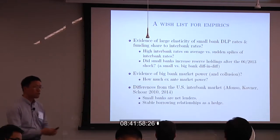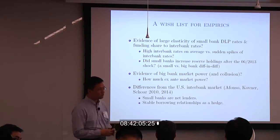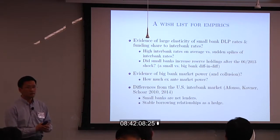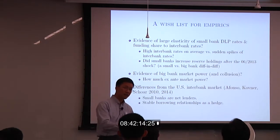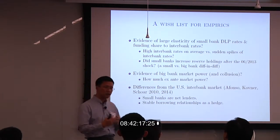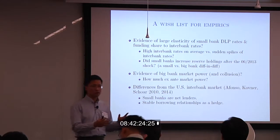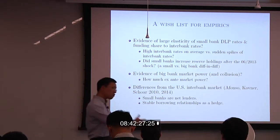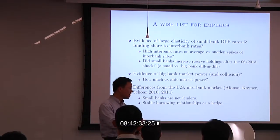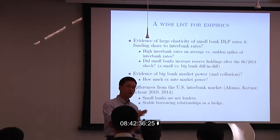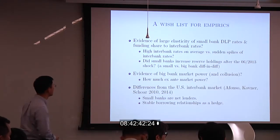Applying the arguments to the US market requires caution because the market structure is very different. Some papers on the Fed funds market have noted that in the US, small banks are net lenders. There is also strong evidence of stable customer borrowing relationships in the US interbank market, where during a liquidity crisis, lenders actually keep rates low rather than raising them because they are providing an insurance service.